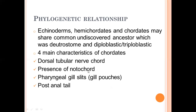The presence of notochord. Third is the pharyngeal gill slits — these are respiratory structures, gill pouches. And the fourth is the post-anal tail — a tail posterior to the anus. These are the four main characteristics of chordates: dorsal tubular nerve cord, presence of notochord, pharyngeal gill slits, and the post-anal tail.